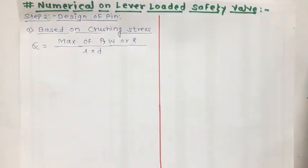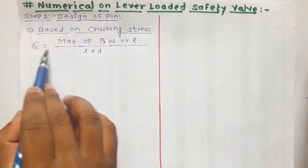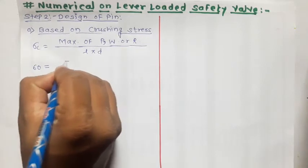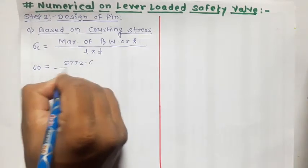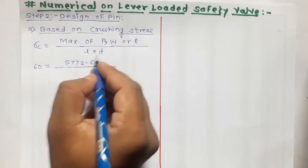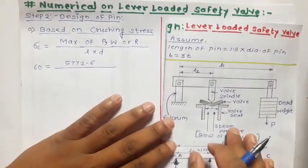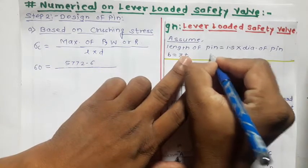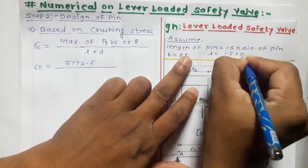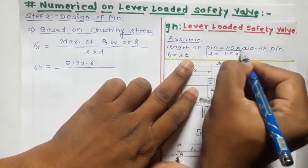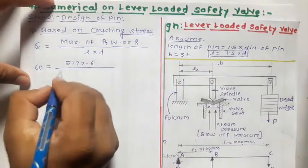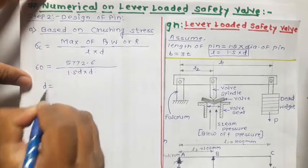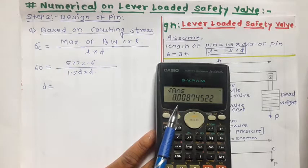The first criteria is design of pin based on crushing stress. The formula uses crushing stress sigma c equal to 60, and the maximum of PWR is 5772.6 divided by L into D. Here we have to determine D, but L is also unknown. However, from the problem statement, we are given the assumption that length of pin L is equal to 1.5 times the diameter D. Substituting L = 1.5D gives 1.5D into D in the denominator. Simplifying, the diameter of pin based on crushing stress is D = 8.008 mm.